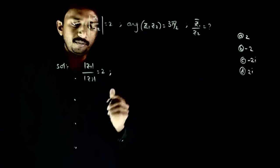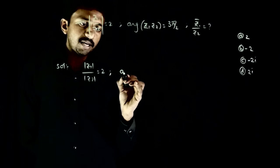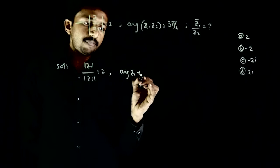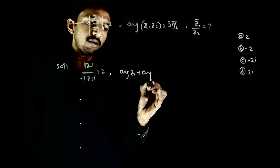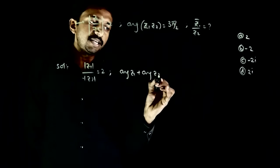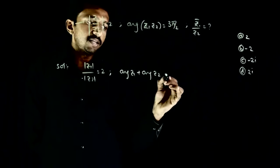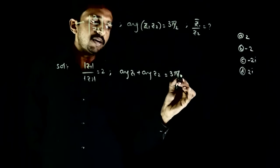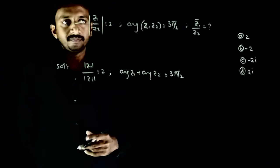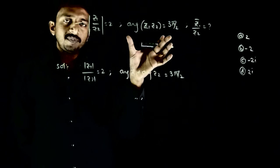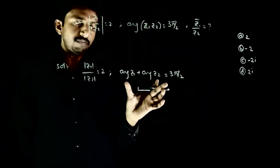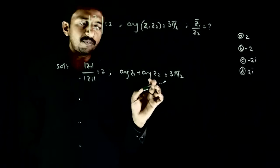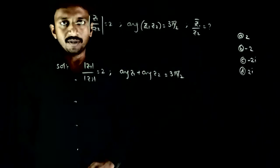Argument of z1·z2 is nothing but argument of z1 plus argument of z2, which is equal to 3π/2. From this equation we can write argument of z1 plus argument of z2 is equal to 3π/2.